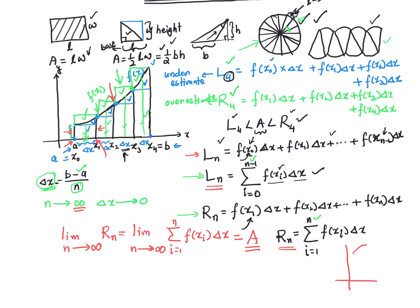For instance, if there is another function and we want to find the area between the two functions between points A and B, we do exactly the same thing: slice it up between A and B into smaller ΔX's, let the ΔX's go to zero by letting n go toward infinity, and then sum up all those small rectangular slices. In the limiting case, you get the area under or between those functions.